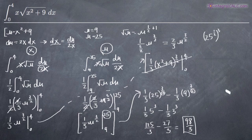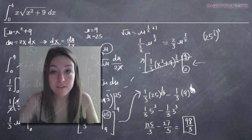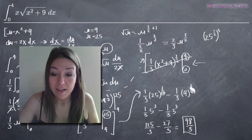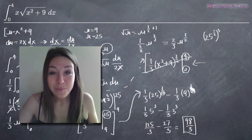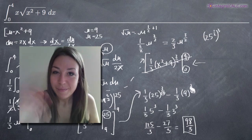And that's it. You could have plugged x squared plus 9 back in for u as we showed, plugging in 4 first and then subtracting what you got when you plugged in 0, and you still would have ended up with 98 thirds. So it works either way. I hope this video helped you, and I will see you in the next one. Bye!